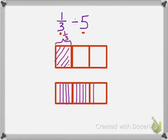And if you notice, by looking at the tape diagram above, 1 third is the same as 1, 2, 3, 4, 5 fifteenths divided by 5.